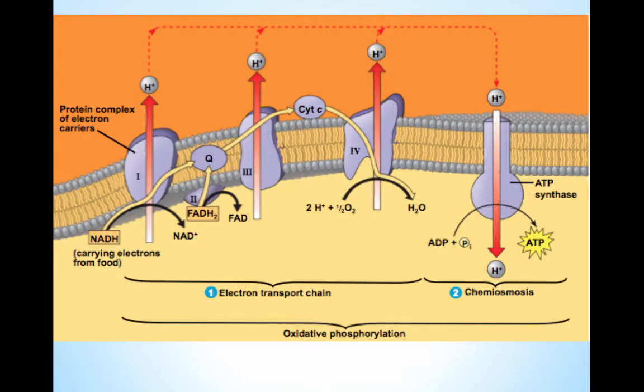The electron transport chain and chemiosmosis produce about 34 ATPs. So from one glucose: two ATPs from glycolysis, two ATPs from the Krebs cycle, and 34 ATPs from chemiosmosis — a total of 38 ATPs. This is an approximate number because under different circumstances, more or less may be made.